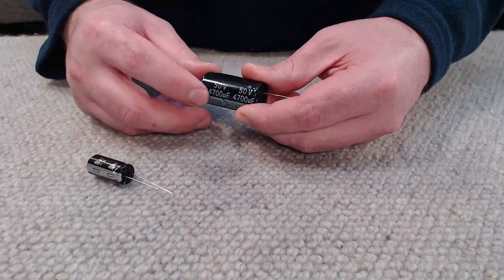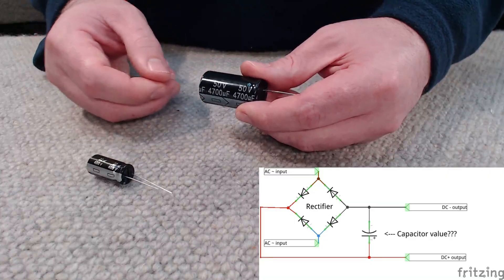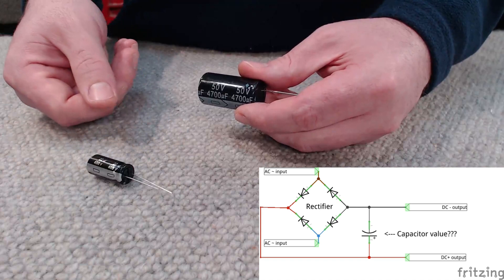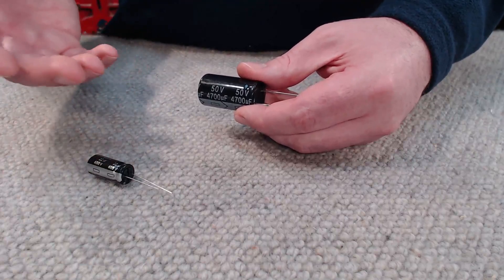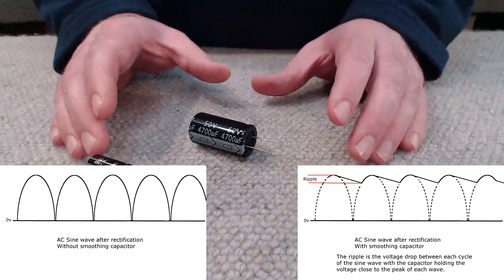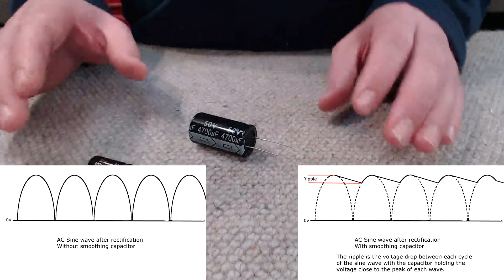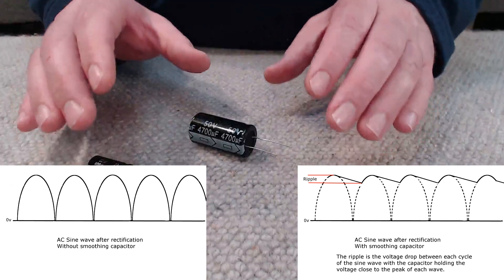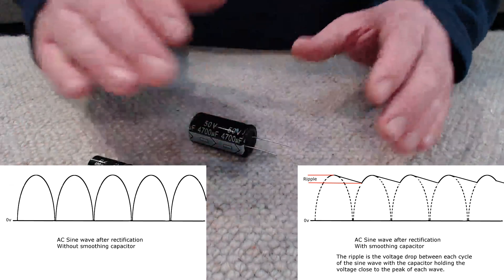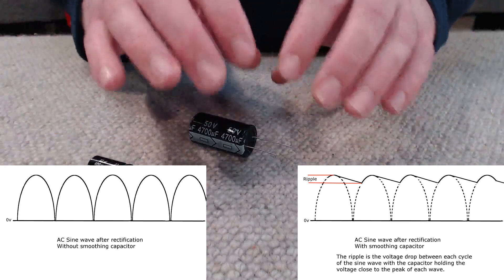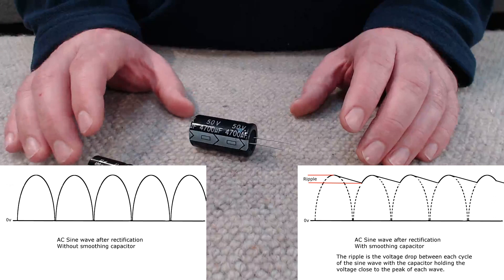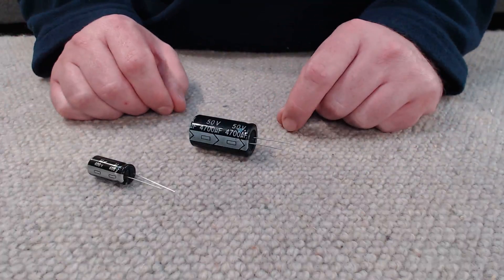But how do we choose what size capacitor we need? Well, this is based on the frequency of the AC power rectifying, the amount of current we're going to be drawing, as well as the acceptable voltage drop. So when power is rectified into DC, after our full bridge rectifier, it's not actually smooth. There's momentary lapses where there's no power, and we're going to not get a smooth voltage. It's going to have ripples in it. The capacitor's job is to smooth out those ripples so that we get much more stable power.